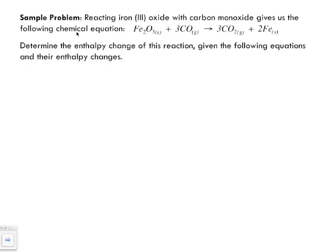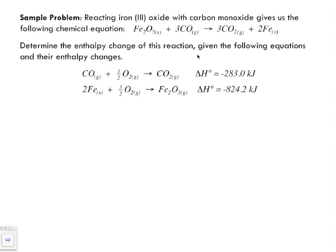Here's a sample problem that puts into perspective all those steps — the idea of manipulating your equations to make them work. We're going to be reacting iron oxide with carbon monoxide to give the following chemical equation: Fe₂O₃ plus 3 moles of carbon monoxide to form 3 moles of carbon dioxide gas and 2 moles of iron. Determine the enthalpy change of this reaction given the following equations and their enthalpy changes.